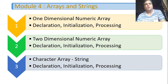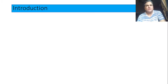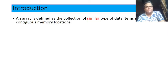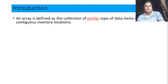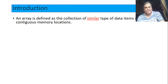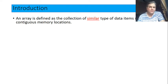Let me introduce the topic called array. An array is basically defined as a collection of similar data type items stored at contiguous memory locations. It is essentially a variable where we can store many values of similar data type.